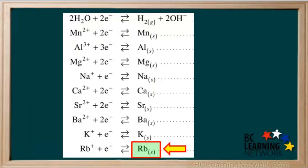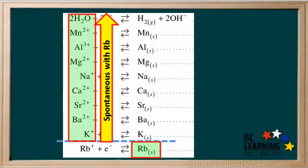A reducing agent on the right, for example Rb, will react spontaneously with every oxidizing agent above it on the left. Looking at the entire table, rubidium metal, Rb, reacts spontaneously with everything on the left side of the table other than Rb+. So Rb solid is the strongest reducing agent on this table.